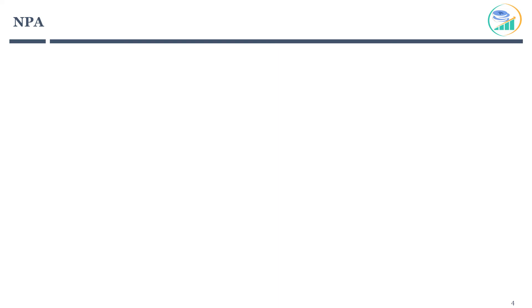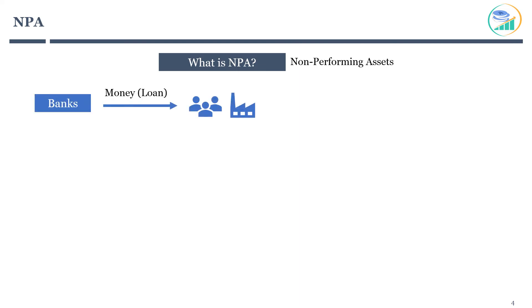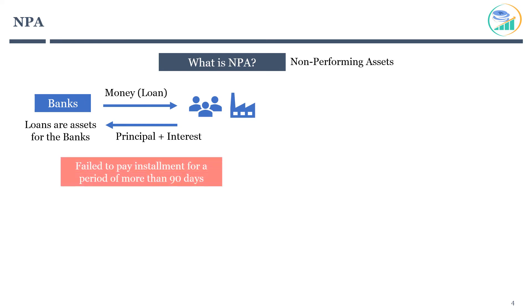In banking, you would have frequently come across the term NPA. NPA stands for non-performing assets. Banks lend money to borrowers in the form of loans, and in return the borrower agrees to pay part of the principal and interest on a monthly basis. Hence, loans are considered assets for banks. The ideal scenario would be that every borrower pays loan principal and interest on time, which would make the bank's business model bulletproof. However, this is not the case in the real world. Individual people and companies default on loans for various reasons. If a borrower fails to pay installments for a period of more than 90 days, the loan will become a non-performing asset for the bank. In other words, the bank will absorb the loan default as a loss, added under the expense bucket from an accounting perspective.